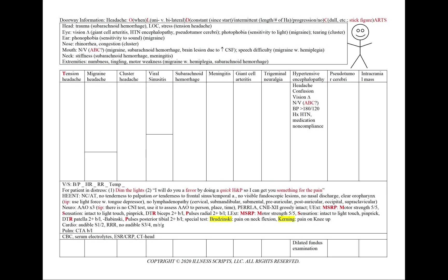In hypertensive encephalopathy, we'll see a headache, confusion, and vision changes. We'll have nausea and vomiting, using A, B, and C. This differential can be given to us in the vital signs if we see a blood pressure greater than 180 over 120, or in our history if we have a hypertensive patient not compliant with medication. We'll add a dilated fundus exam. In pseudotumor cerebri, we'll see a headache with blurred vision, nausea and vomiting — using A, B, and C — and classically an obese female patient with a history of oral contraceptives. We'll add a urine HCG with LP and CSF analysis.